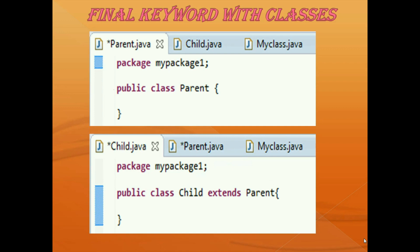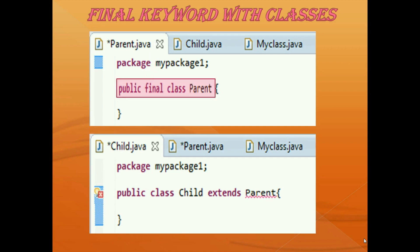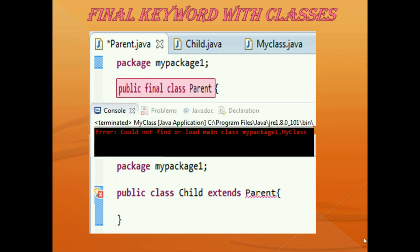Now if I add the final keyword before the class declaration, writing 'public final class parent' instead of 'public class parent', this class becomes a final class. Now let's see what happens when I compile — it shows an error. You can also see a red cross and a pink underline below the parent class name, indicating there is an error because we defined the parent class as final.